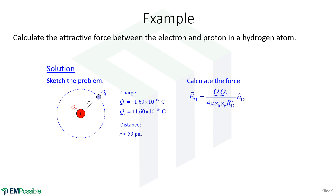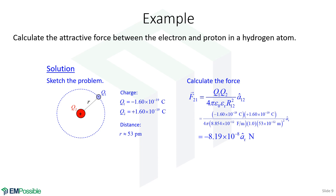So we write Coulomb's law and start plugging in our numbers. We know our two charges and we know the free space permittivity — 8.854 times 10 to the minus 12 farads per meter. Assuming this is in vacuum, the dielectric constant is 1.0, and if we're analyzing something at the atomic scale it's really not possible to have any other kind of material there. The distance is 53 picometers. Applying the calculation, we get minus 8.19 times 10 to the minus 8 newtons in the radial direction.